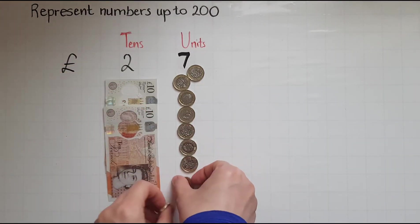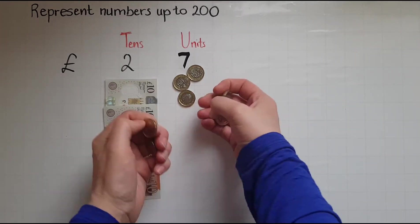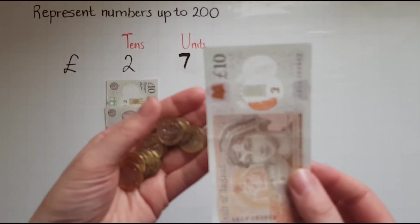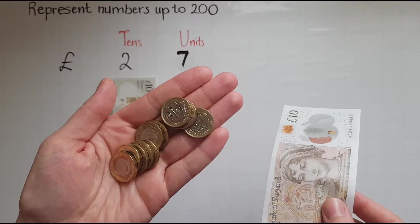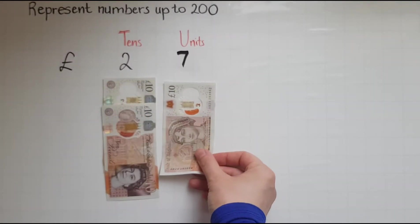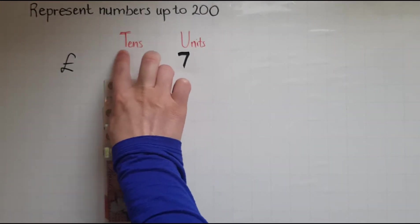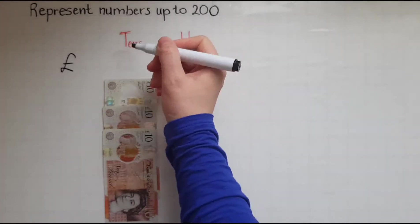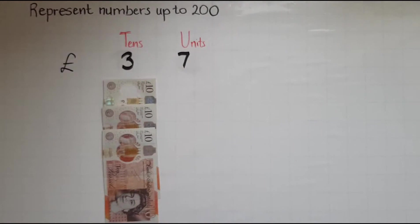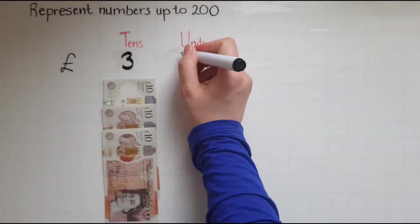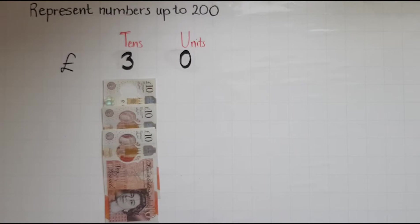So I will collect these 10 pound notes and I will transfer them or convert them with this 10 pound note. And do I keep it here? No, it's got to go to the tens, not the units. So now the amount of money that I have has changed. I have three tens and no units. I haven't got any coins in this column. So I've got 30 pounds.